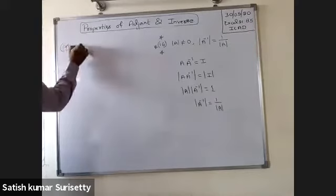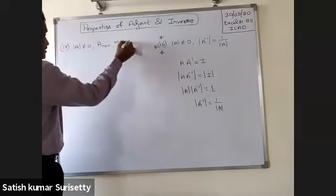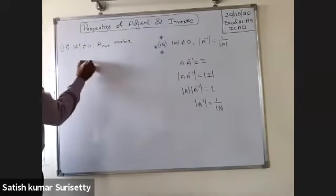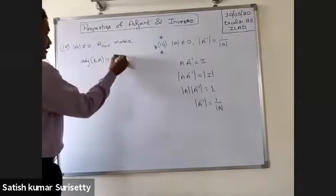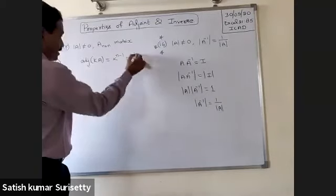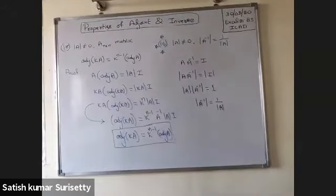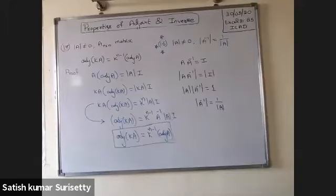If A is a non-singular square matrix of order n, then adjoint of kA equals k to the power of n minus 1 into adjoint of A. To prove this, use A into adjoint of A equals determinant of A into I, replace A with kA, and then simplify.